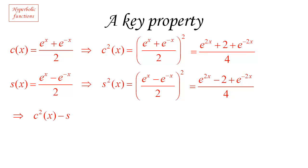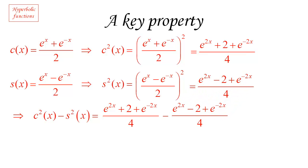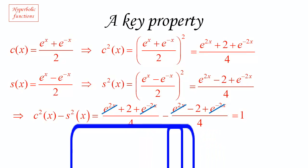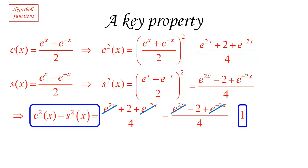Now let's compute c squared of x minus s squared of x — and you may start to see where the connection with the hyperbola comes in. We take the expression for c squared of x and subtract the expression for s squared of x. These are two fractions with the same denominator. The e to the 2x terms cancel, the e to the minus 2x terms cancel, and we're left with 2 minus negative 2, which is 4, divided by 4. That all equals 1. So for any value of x, the difference between the squares of these two basic hyperbolic functions is always equal to 1.